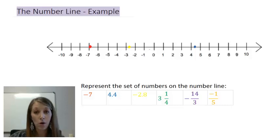So 3 and a fourth is past 3 and between 3 and 4, and 1 fourth is 1 fourth of the way up. So I'm going to do 3, and if you cut this into quarters, it's 1 quarter the way up. So my green dot is going to go close to there.